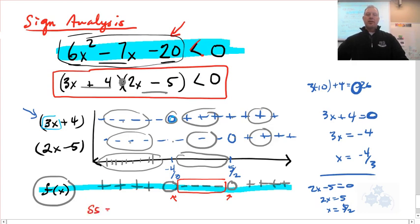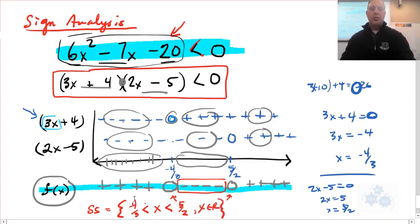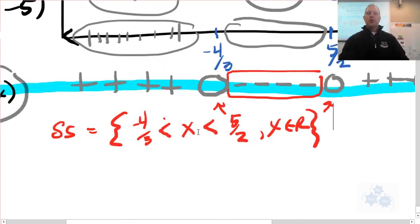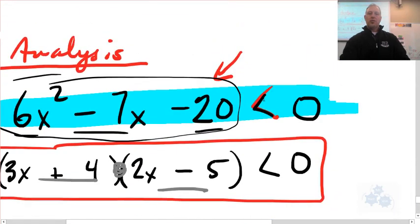The solution set is anywhere where x is between, so you use this notation, between negative 4 over 3 and positive 5 over 2. And you can put comma x element of R if you want. You don't have to for me. But that is your solution. So let me just show you. I'll zoom in there. So that is your solution. Negative 4 over 3 less than x less than 5 over 2. Because this is the area where that function is negative. And that lines up with your question. Where is this function negative?